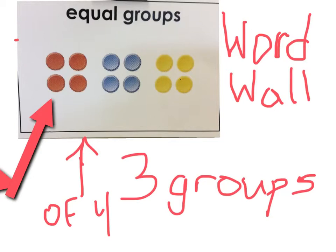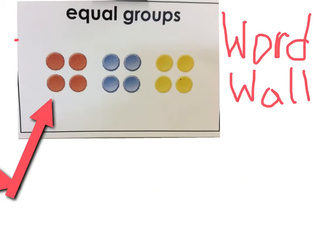Not necessarily do equal groups all have to be different colors. That's something that you can add in if you want. But an equal group is basically, like I said, more than one group that are equal. So if I had to do an equal group, I'd probably do one like this. I'll do mine with tallies.